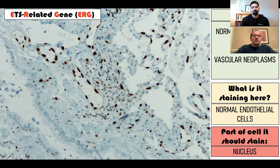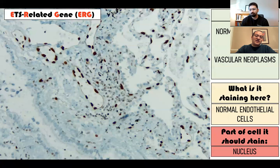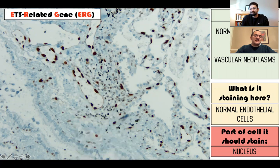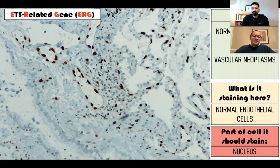Continuing with nuclear markers, the next one is ERG - the ETS related gene. This is a marker of endothelial cells. Can you tell what this structure is that I'm pointing at? It seems to be a vessel - yes, a small blood vessel, almost capillary size. You can see the cells lining it are positive - these are endothelial cells. ERG has become a really good marker of vascular things, much better than what we had before with CD34 and CD31. It is also a nuclear marker.